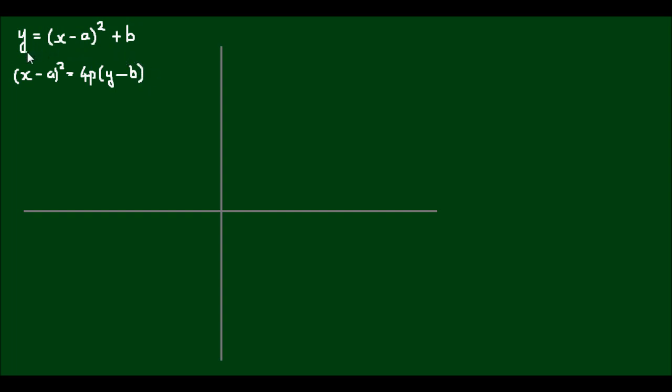So here we have the vertex form of the parabola and below we have the conic form where the variable p is simply the distance above or below the vertex for the focus and the directrix respectively.